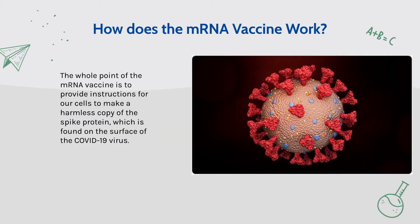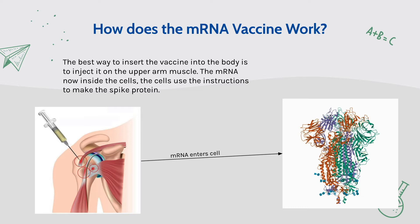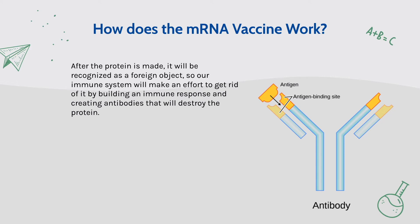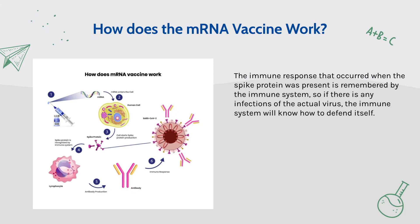How does the mRNA vaccine work? The whole point of the mRNA vaccine is to provide instructions for our cells to make a harmless copy of the spike protein, which is found on the surface of the COVID-19 virus. The best way to insert the vaccine is to inject it into the upper arm muscle. Now inside the cells, they use the instructions to make the spike protein. After the protein is made, it will be recognized as a foreign object, so our immune system will make an effort to get rid of it by building an immune response and creating antibodies. The immune response is remembered by the immune system, so if there are any infections of the actual virus, the immune system will know how to defend itself.